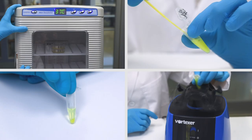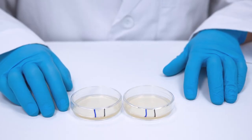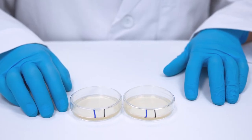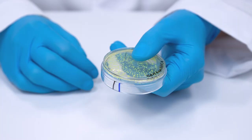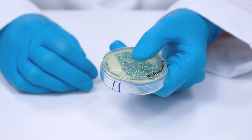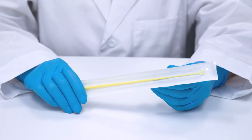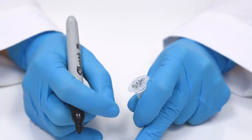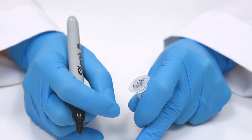For this module, you will need 2 LB agar plates containing ampicillin and IPTG, transformed bacteria from Module 1, or a plate of control pre-transformed bacteria, sterile inoculating loops, and finally a microcentrifuge tube containing lysis buffer.